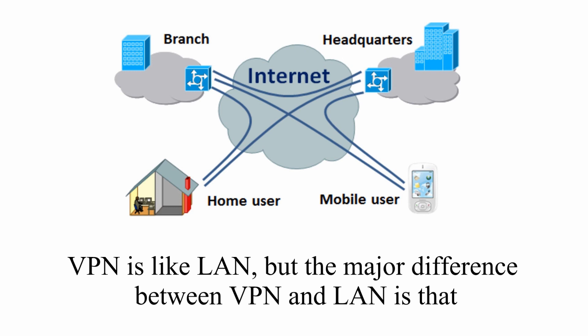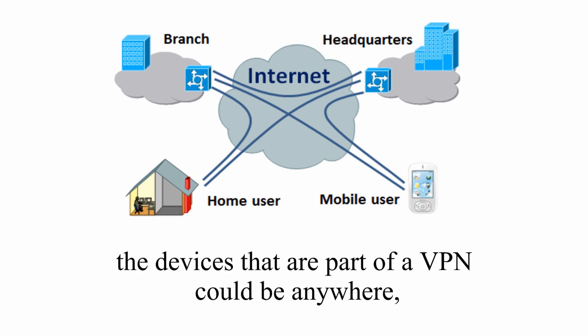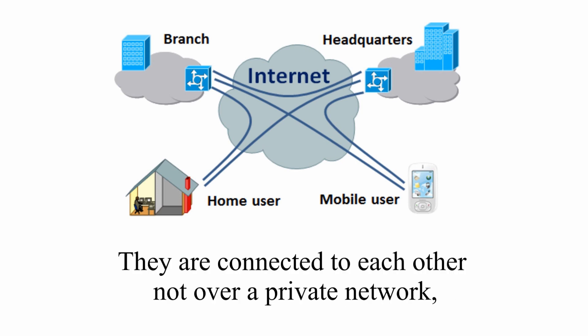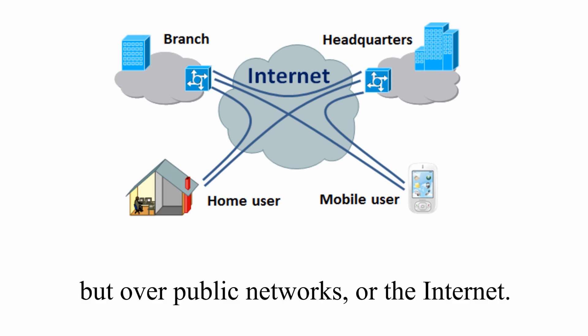VPN is like LAN. But the major difference between VPN and LAN is that devices that are part of a VPN could be anywhere, not limited to a geographical area. They are connected to each other, not over a private network, but over public networks or the internet.